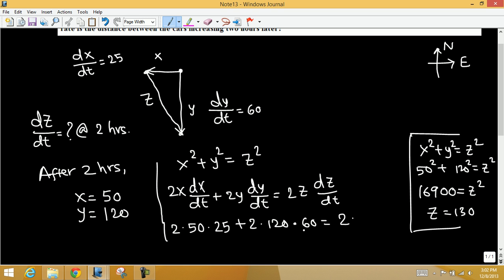So z is 130 times dz/dt, which is what we're looking for. Multiply: 2 times 50 times 25 is 2,500, plus 2 times 120 times 60 is 14,400, equals 2 times 130, which is 260, times dz/dt.